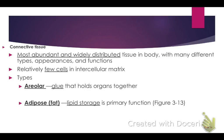Fat cells are distributed differently depending on body type. Women distribute fat cells differently than men. There's the pear body type and the apple body type. If you have an apple body type you get more weight around your midsection, which is harder on your heart. If you're a pear you have more in the thighs. Women tend to be more pear-shaped because that's where fat is stored for breastfeeding and having healthy babies.